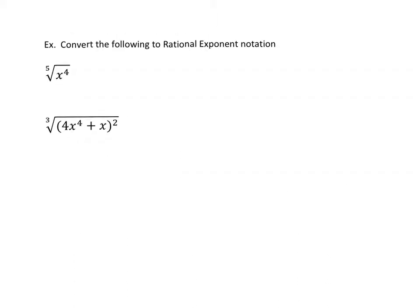Let's look at this next example. We have the 5th root of x to the 4th power, and we can rewrite that as x to the 4 5ths power, where 4 5ths is our rational exponent.